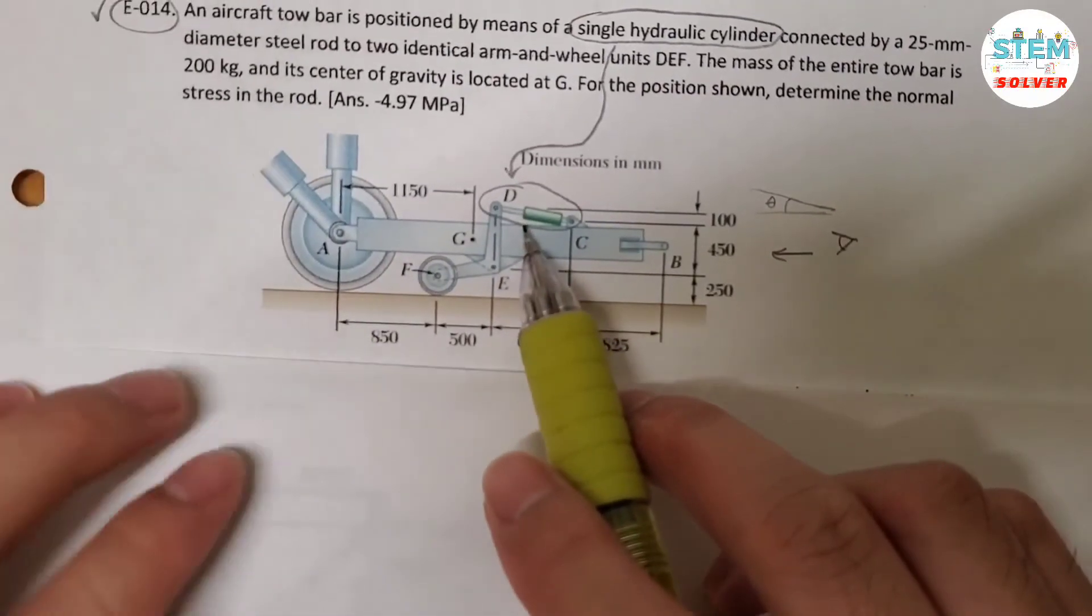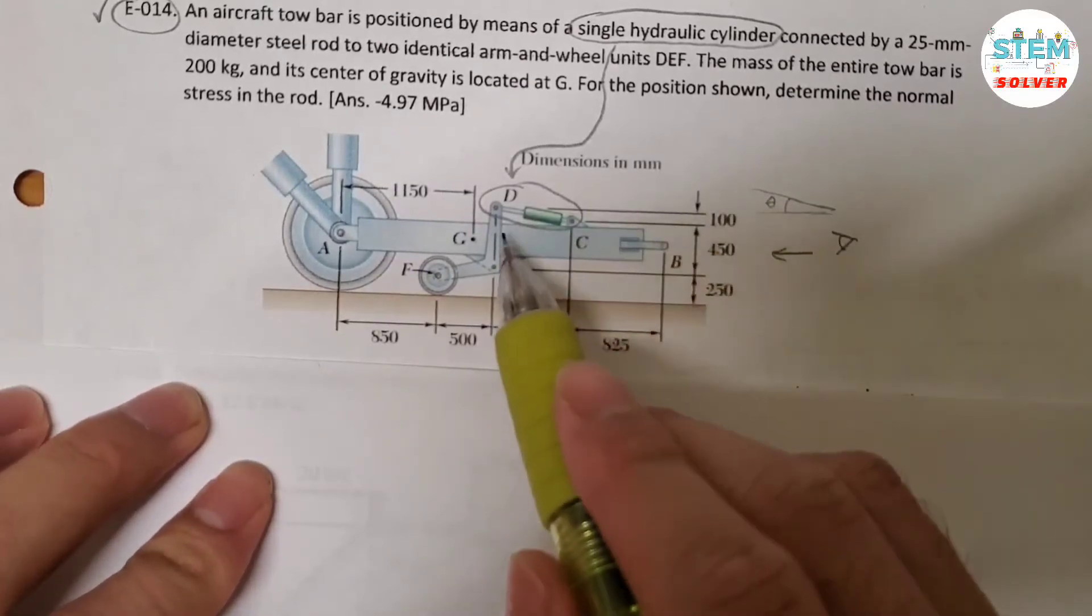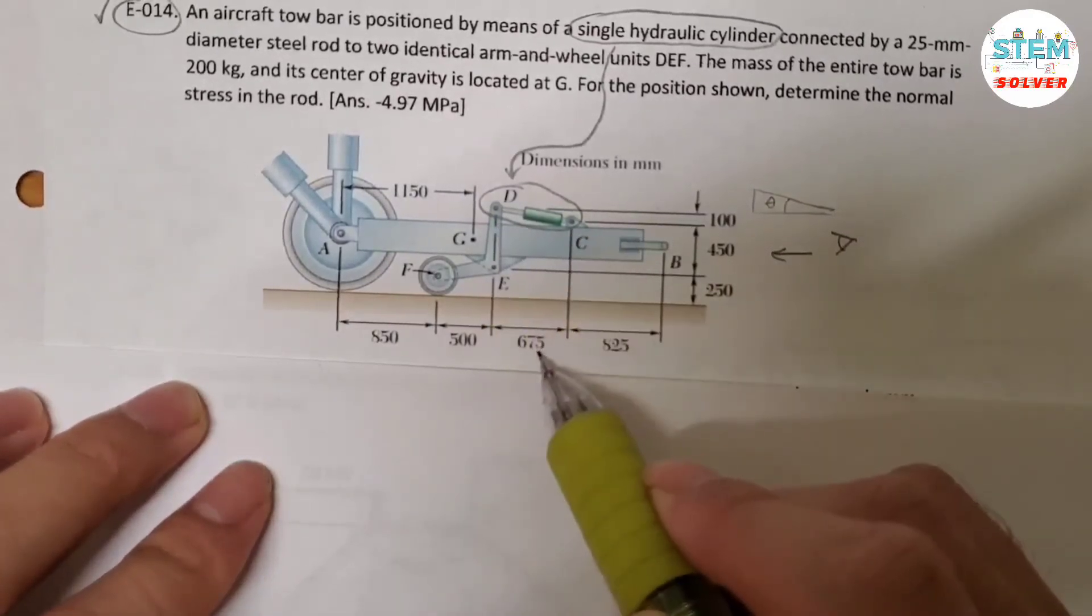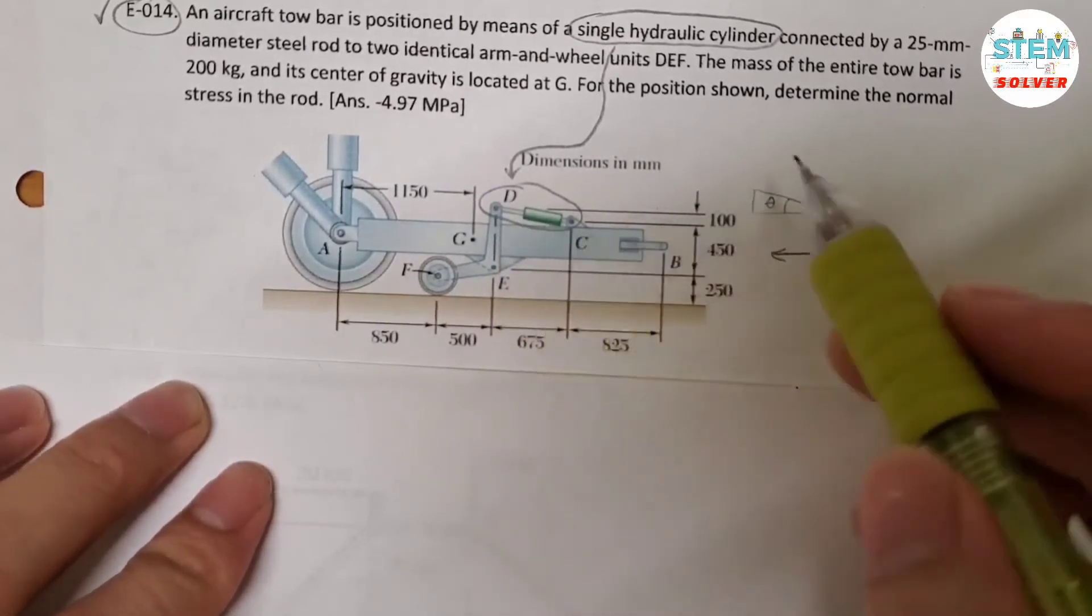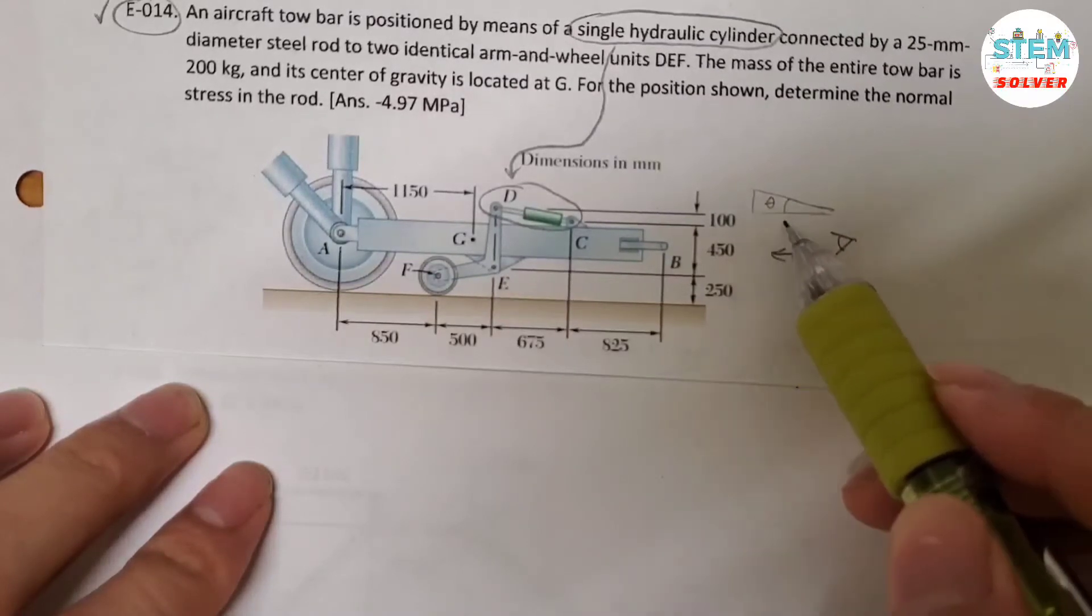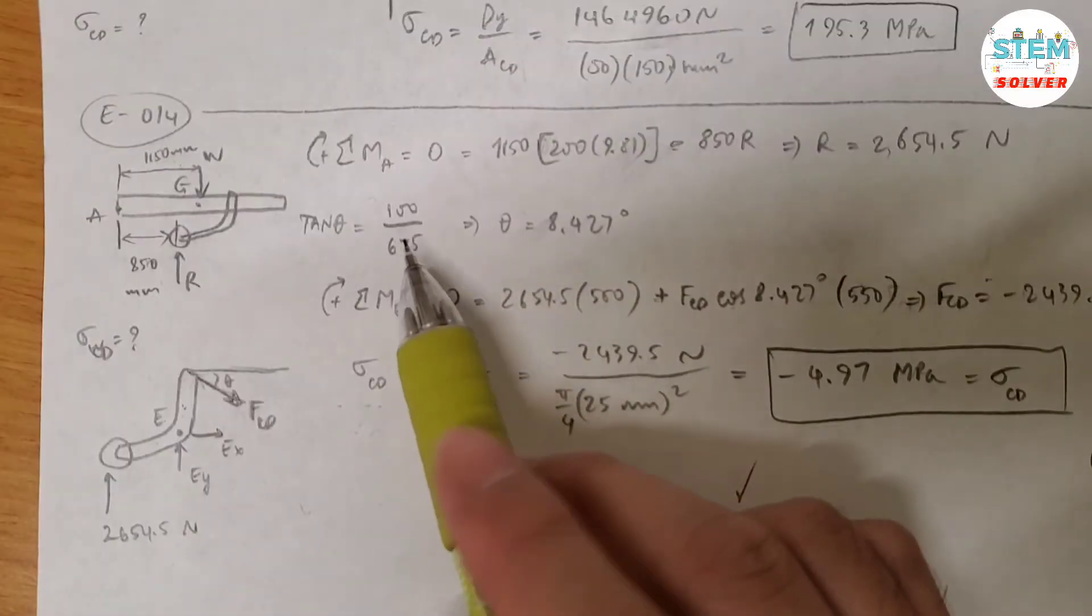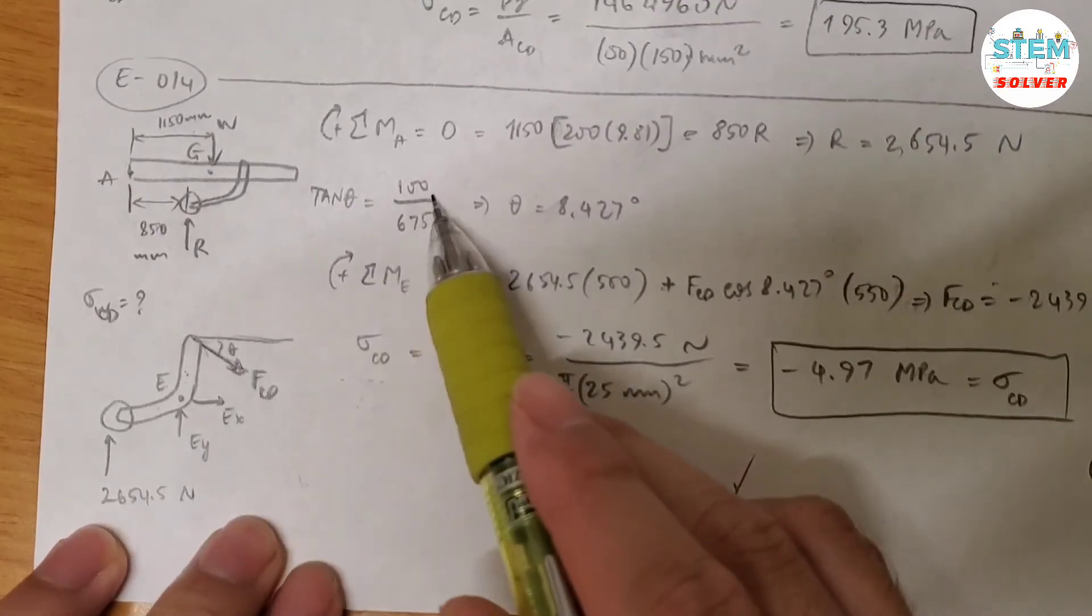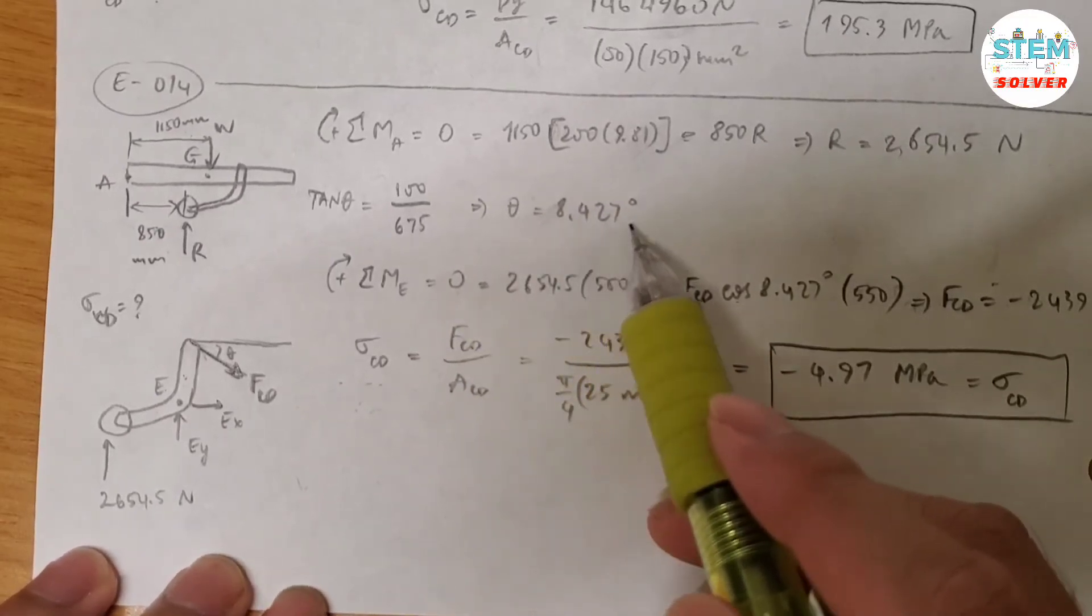So how do you find this angle? You make a triangle. So you have the distance from here to here which is 675, and the distance from here to here is 100. So tangent of this angle equals opposite over adjacent, which is 100 over 675. Which is what I had here. Tangent of theta equals 100 over 675. Then I got theta equals 8.427 degrees.